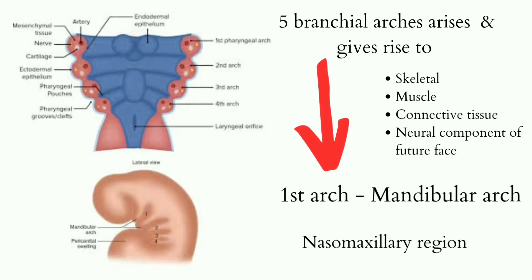By around the 4th week of intrauterine life, the branchial arches arise and give rise to skeletal, muscle, vascular, and neural components of the future face.